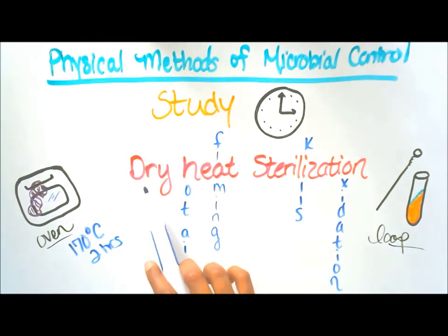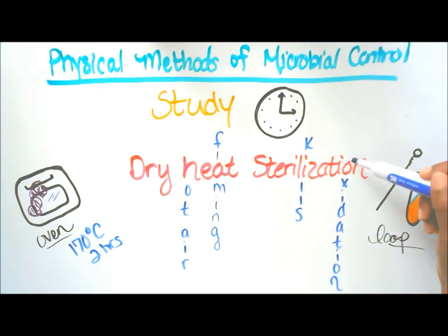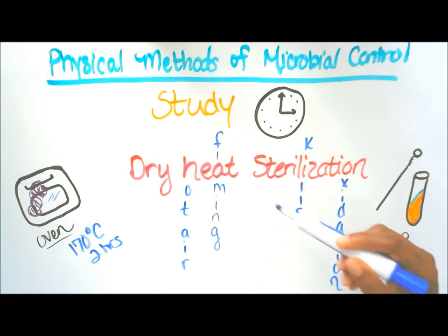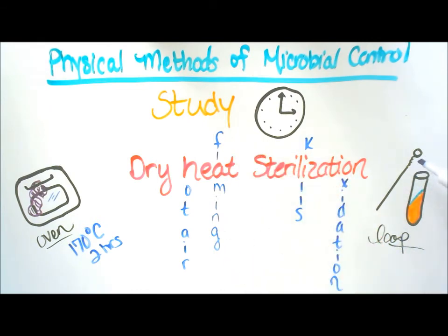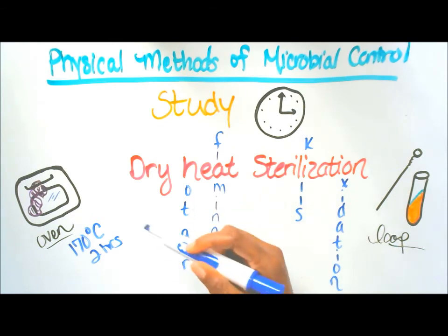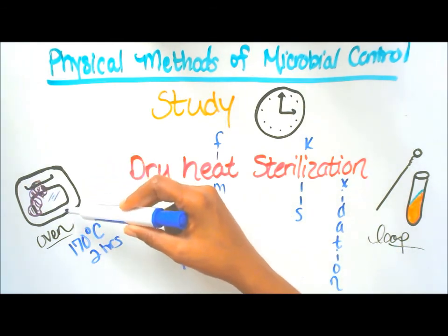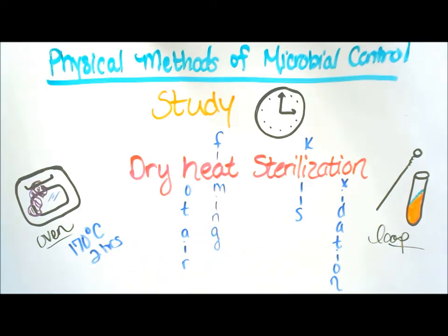So now we have dry heat sterilization: microbes are killed by oxidation. Two examples — first, flaming, using an inoculating loop with a flame to kill microbes. Second, hot air sterilization using an oven, with a temperature of 170 degrees Celsius for two hours. That is dry heat sterilization.